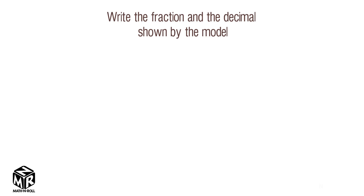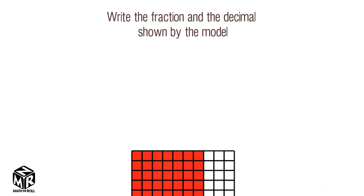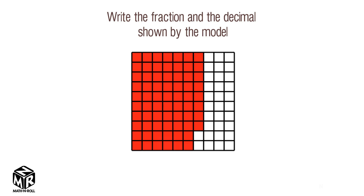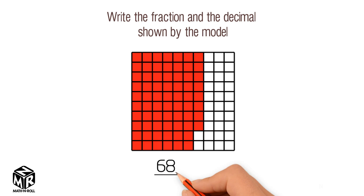Let's try an example. Write the fraction and the decimal shown by the model. This model is divided into 100 equal parts. Sixty-eight parts are shaded. Each part represents one hundredth, so we have sixty-eight hundredths. We can write sixty-eight hundredths as a fraction and as a decimal.